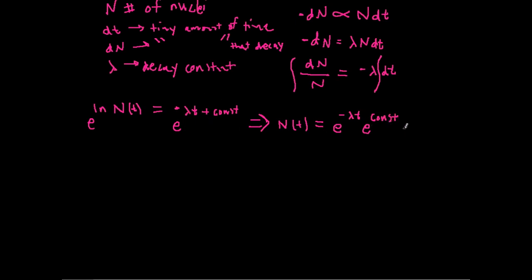And really, e to a constant, that itself is just a constant, and I'm just going to call that constant b, it doesn't really matter, we'll solve for it here in a second. So equals e to the constant, I'm just going to call this b, e to the negative lambda t. Whoops, I think I accidentally got a slightly different shade, oh well.